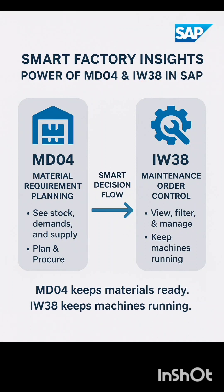Welcome to Quick Learning. Today we will be discussing the power of two transactions in SAP: MD04 and IW38. These are insights of our smart factory. MD04 is Material Requirement Planning — it is used to see stocks, demands, and supply to plan and procure. IW38 is Maintenance Order Control — it is used to view, filter, and manage orders and keep machines running.